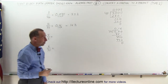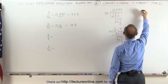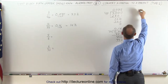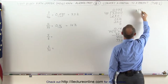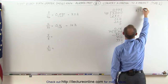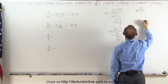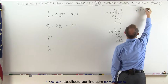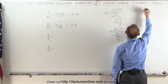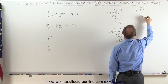5 divided by 8 — same thing. We take 5 and we divide it by 8. 8 goes into 5 zero times. Put a decimal place there, put a decimal place there. Add a 0. 8 goes into 50 — that looks like 6 times. 6 times 8 is 48. Remainder is 2.